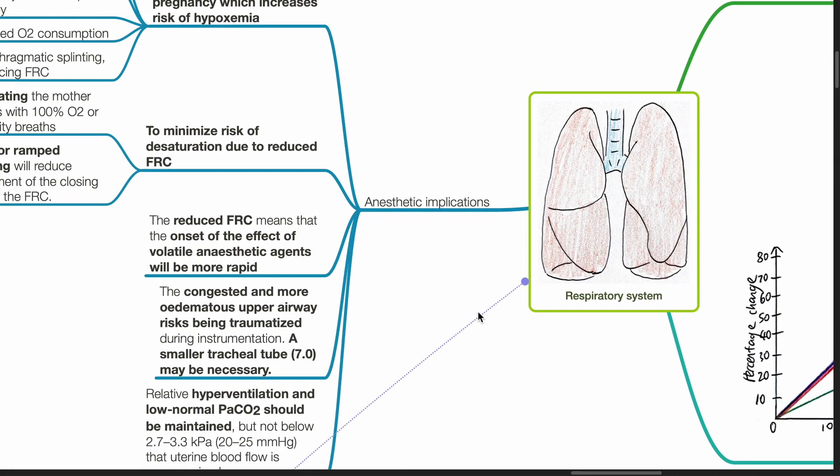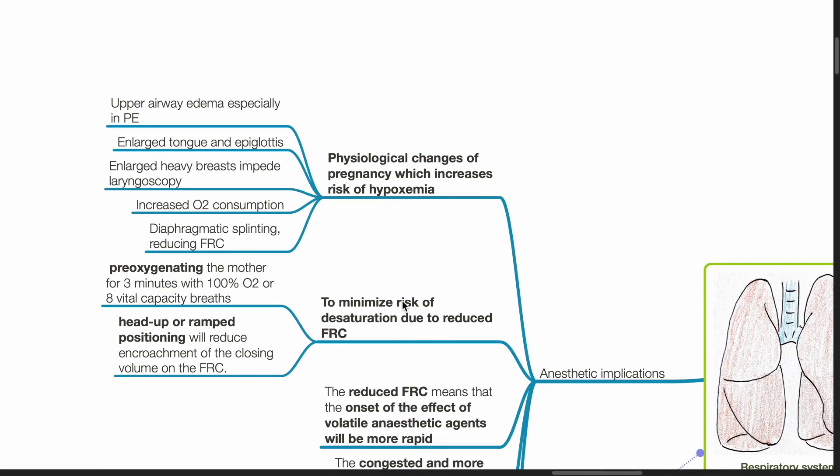Anesthetic implications. Various physiological changes of pregnancy increase the risk of hypoxemia, such as upper airway edema especially in preeclampsia, enlarged tongue and epiglottis increasing the difficulty of intubation, enlarged heavy breasts impeding laryngoscopy, increased oxygen consumption, and diaphragmatic splinting reducing FRC and effectiveness of pre-oxygenation.